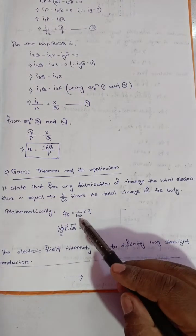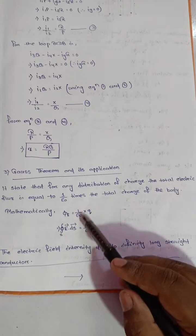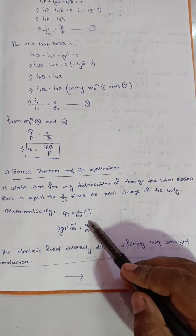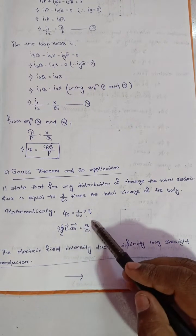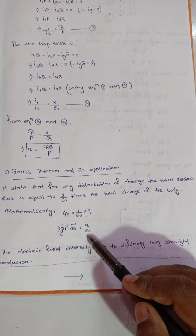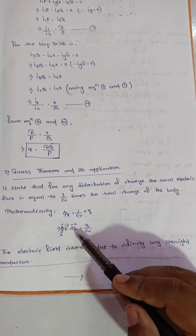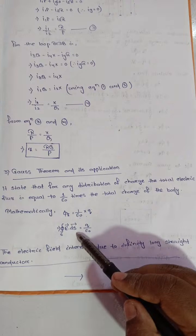The total charge within the surface gives φ = q / ε₀. In integral form: ∮ E · ds = q / ε₀.